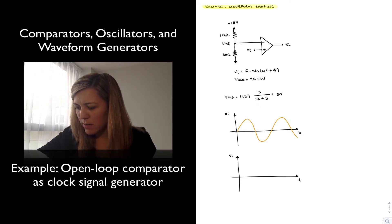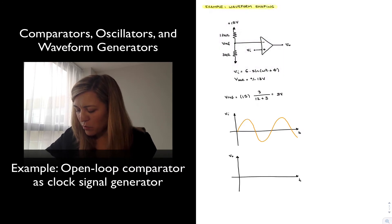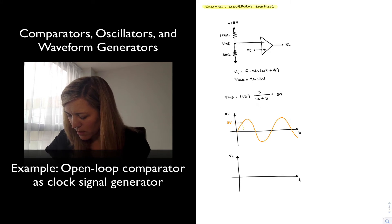...is going to be a square wave. Whenever my input signal is equal to 3 volts or higher than 3 volts, so let's imagine this is my 3 volt point, then my output signal will be high, and whenever my input signal is lower than 3 volts then my output signal will be low.